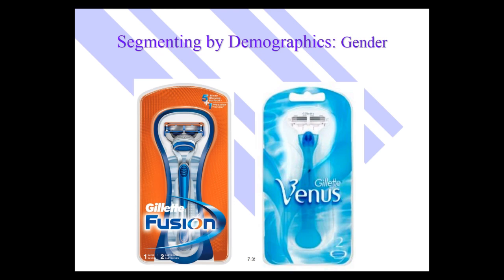Gillette makes razors targeted to men or women. The Gillette Fusion is targeted to men; Gillette Venus — the name says it right there — is targeted to women. The blades are virtually identical except for different color schemes. The handles are slightly different, taking into account that men are shaving their face and women are often shaving their legs.